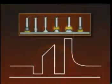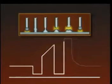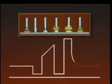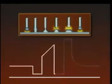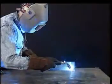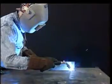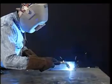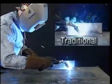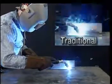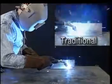This waveform schematic depicts very rapid changes in current. The STT machine responds to changes in and the condition of the welding arc. Current is raised and lowered to transfer molten droplets cleanly. Normally, violent short arc or globular transfer processes are stabilized.